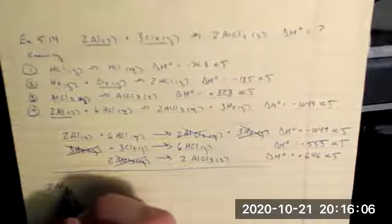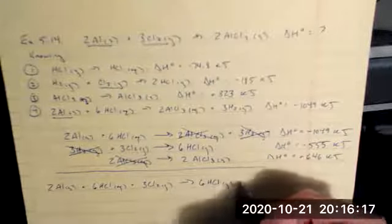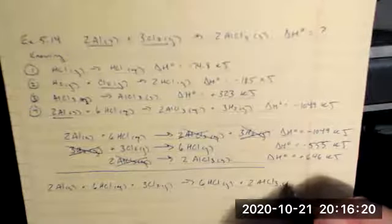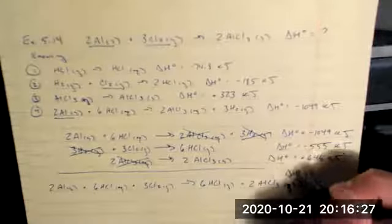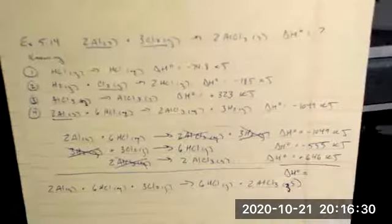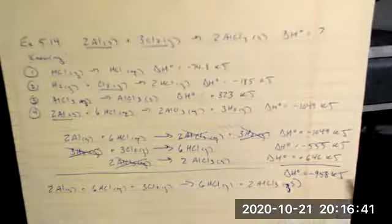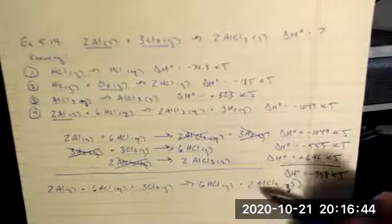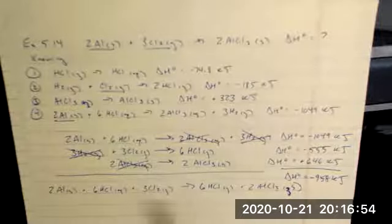So if I pause and consider what I have so far, I've got two aluminum solids plus six HCl aqueous plus three Cl2 gas going to six HCl gas plus two AlCl3 solid. And that delta H value so far is the sum of these things before. So negative 1,049 plus negative 555 plus positive 646 gives me negative 958 kilojoules. So I've gotten closer, but I'm not at my final equation that I was asked to do. I have to get rid of those HCls. And this is where reaction one is going to come into play.